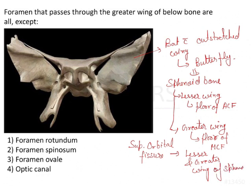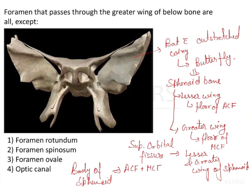Another very important thing is that the body of this sphenoid bone is going to be present in all three cranial fossae — that is the anterior cranial fossa, middle cranial fossa, and the posterior cranial fossa. The body of the sphenoid will be seen forming at least some part of all three cranial fossae.